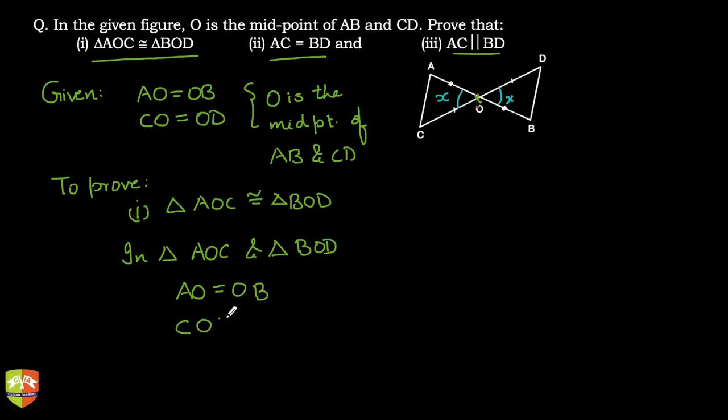And CO is equal to OD. This is also given. Where is it given? See, I had already introduced these two things which have been given. And angle AOC is equal to angle BOD, and this is given. You can write vertically opposite angles.